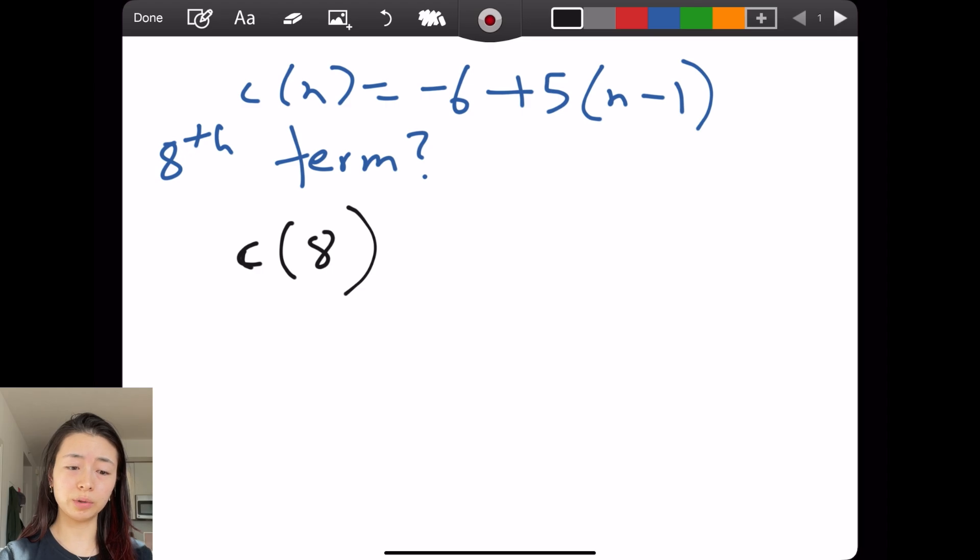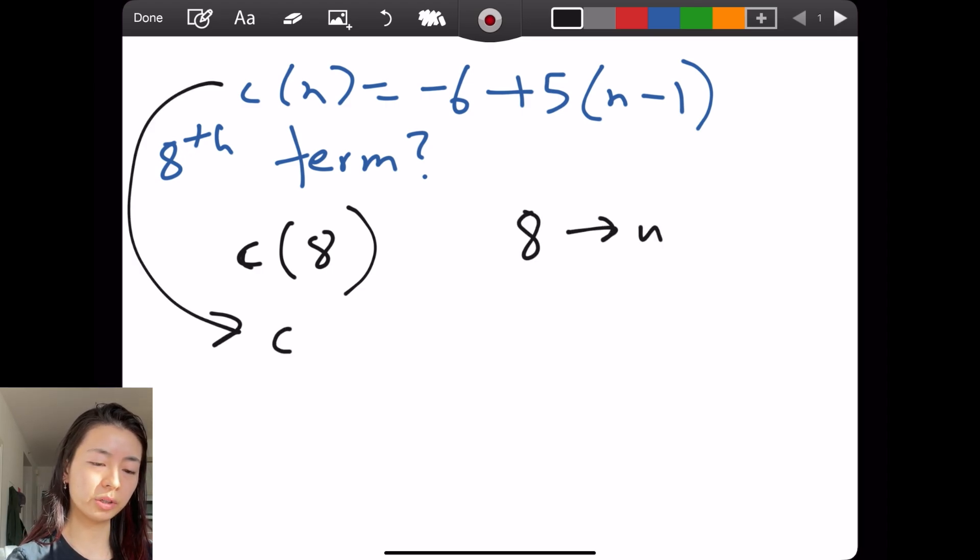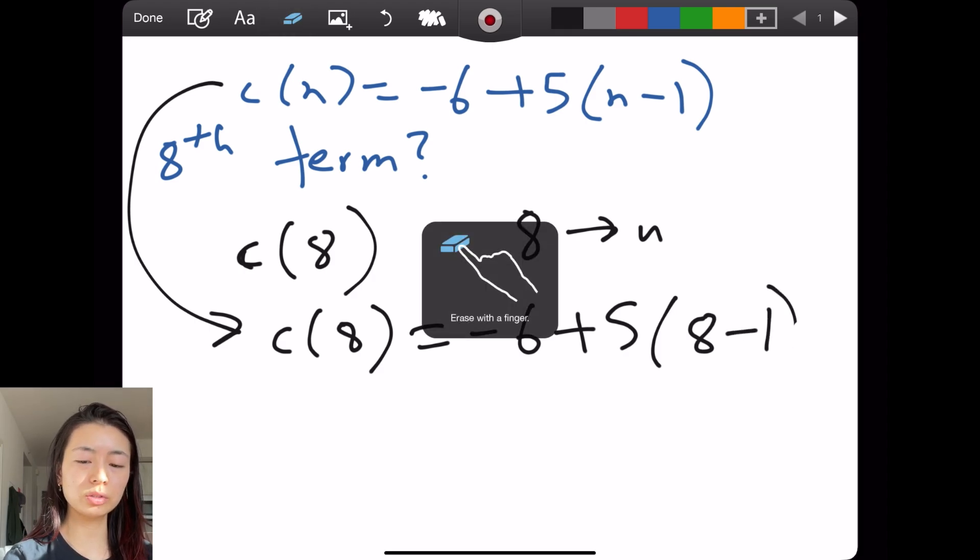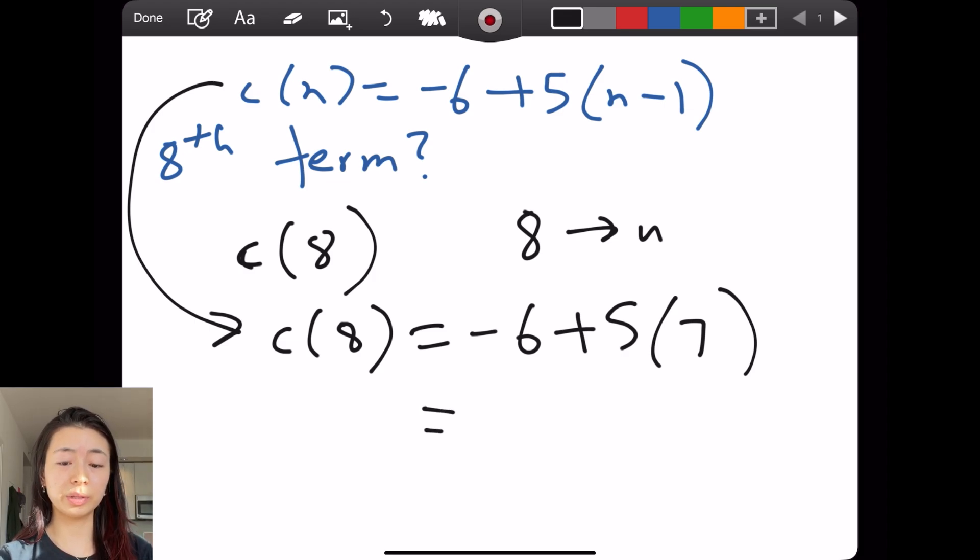Same thing, right? We have to understand what we're even trying to do. The eighth term means that we are trying to find c(8). What does that mean? Then we plug in eight for n. It's pretty straightforward. c(8) equals negative six plus five times (8-1). And usually I wouldn't write this out because it's just straightforward. Seven. My student said, next, we're going to do negative six plus five, which is negative one, then times seven. So we get negative seven.